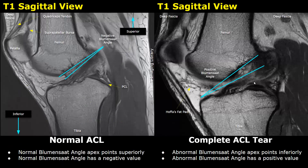Now we will look at the Blumensat angle in this case. The Blumensat line is drawn along the margin of the lateral femoral condyle, and the second line is drawn along the ACL margin. These two lines are meeting at this point. This is the Blumensat angle — the apex points inferiorly and will have a positive value.